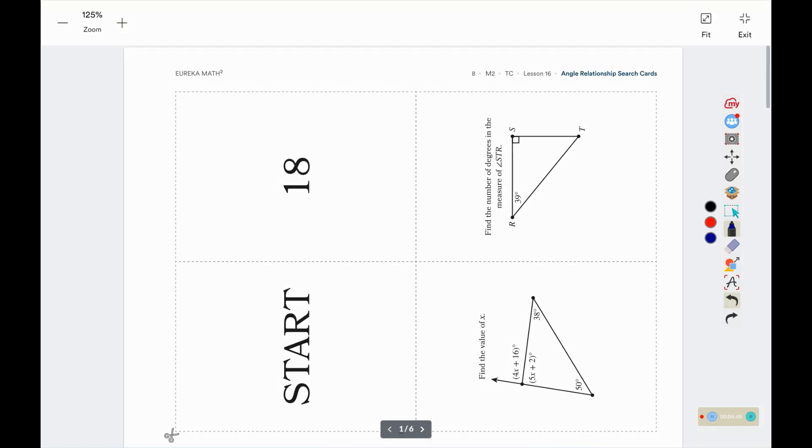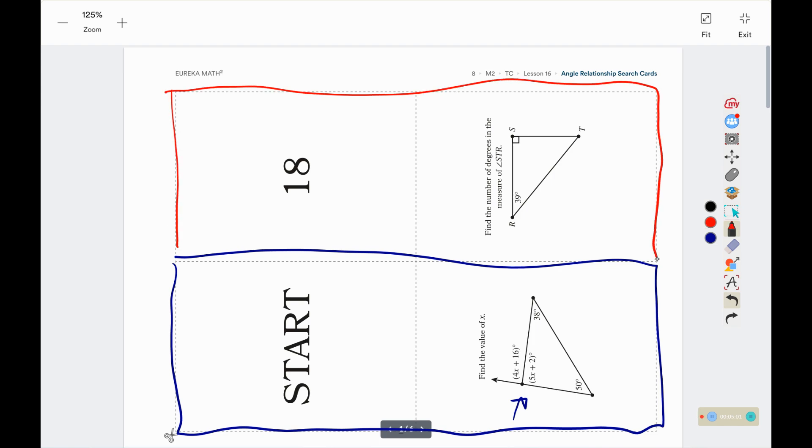So it's a little sideways here, but this is what the start card looks like. And so the start card has the question we just answered, and then we would line up the next card with it because its answer is 18. That's what we just solved. Now we get to solve this problem and look for the next answer.